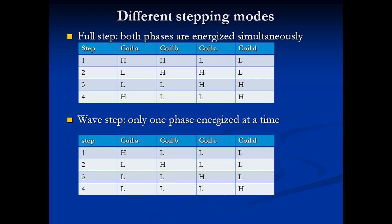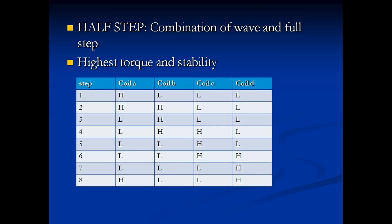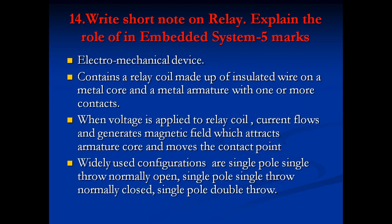In wave step, only one phase gets energy at a time — out of four coils, one coil gets energy and the remaining three are in a low state, giving four steps. Half step is a combination of full step and wave step, which gives the highest torque and stability; it gives eight steps. Depending on the combination, different coils get different energy levels — sometimes one coil gets energy, sometimes two coils get energy.